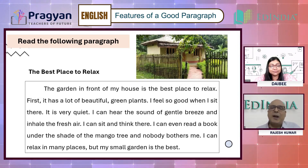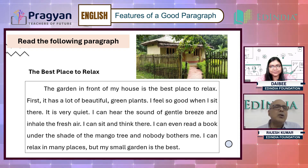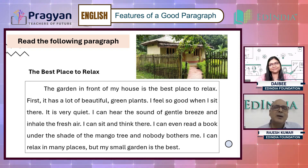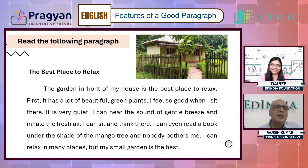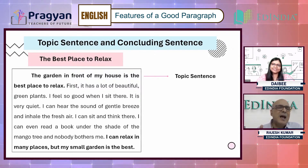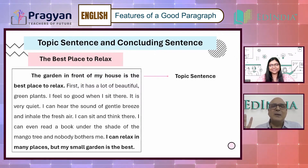The first sentence of this paragraph introduces the whole idea. He is talking about his garden — not because there are plants, trees, or beautiful flowers, but because it's the best place to relax. Look at the title: 'The Best Place to Relax.' What is the place? It is my garden in front of my house, and it is the best place to relax.